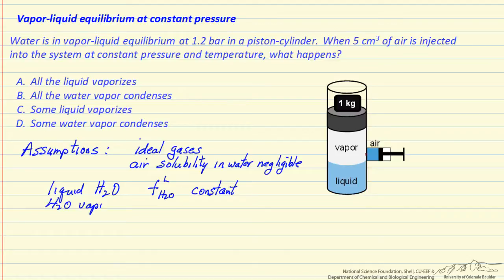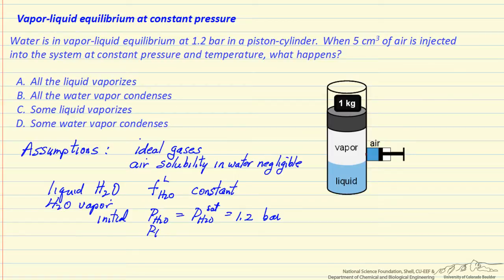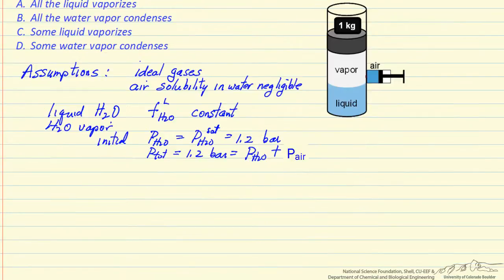Water vapor, however, is different. The total pressure is 1.2 bar. Initially we only have water vapor present, so the pressure of water in the vapor phase equals the saturation pressure of water, which is 1.2 bar. At a later time, the total pressure is still constant at 1.2 bar, and it equals the pressure of water plus the pressure of the air. So the air must have some partial pressure, and once we've injected the air, the pressure of water is less than 1.2 bar.